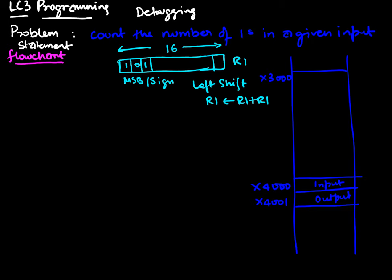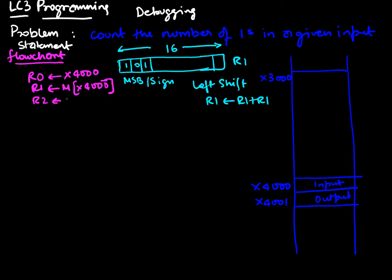Let's design a flowchart for this problem. I'll use r0 to hold the memory address x4000, r1 to hold the memory contents at x4000 which is my input number, and r2 will hold the count, initialized to zero. So we've initialized all of them — that's our first step.